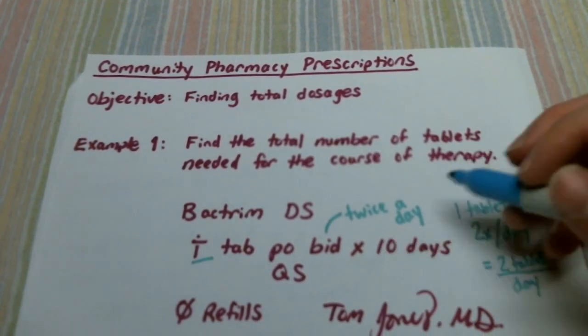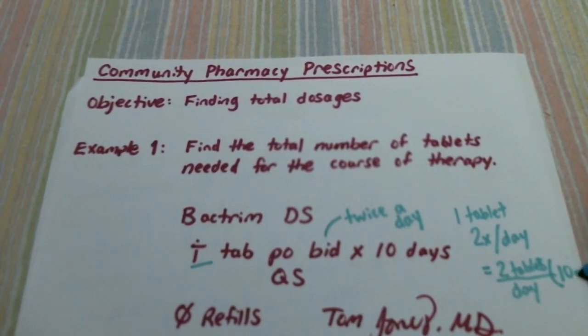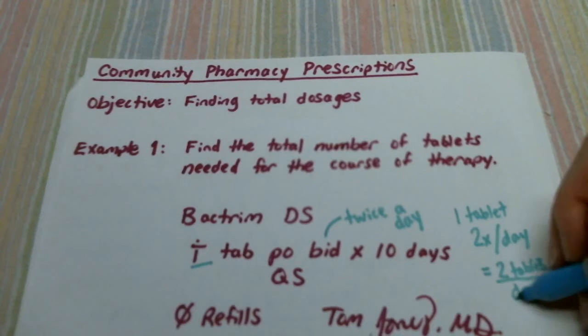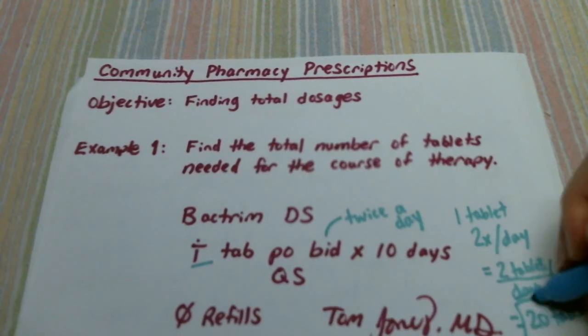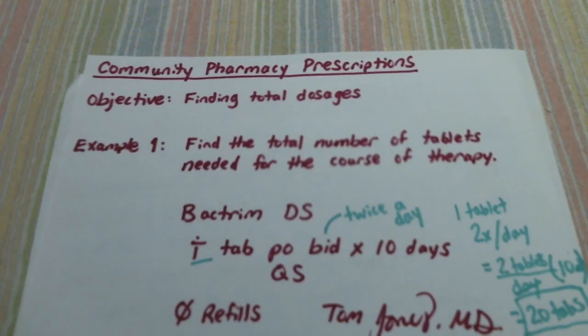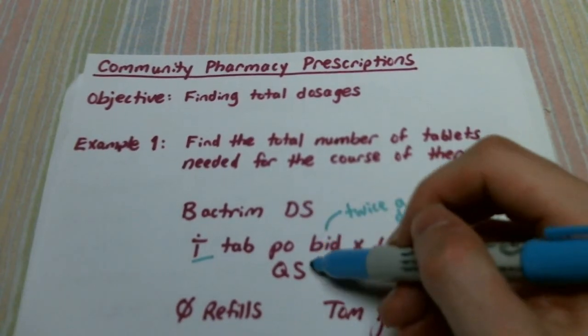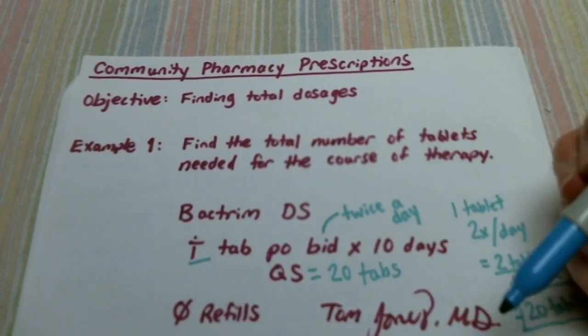We're going to multiply that by ten days. So multiply that by ten, put a D for days, multiply that out we get twenty tablets. The math behind this honestly could not be any easier. So for your quantity sufficient you're dispensing twenty tablets.